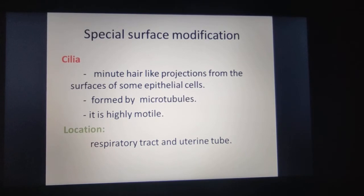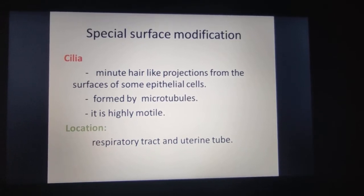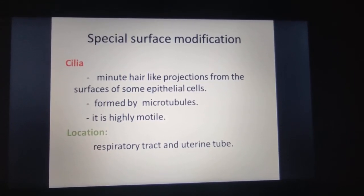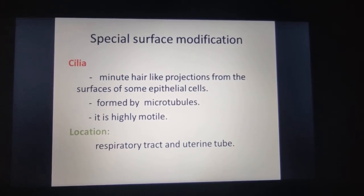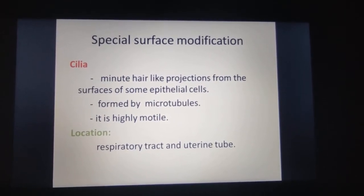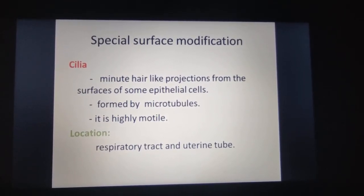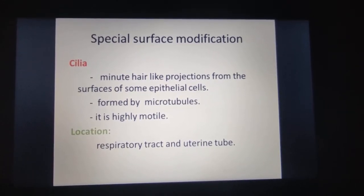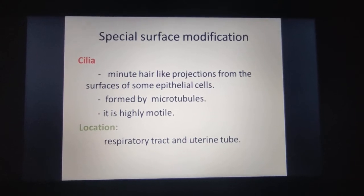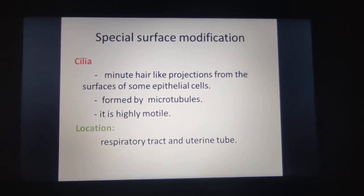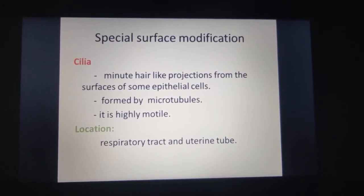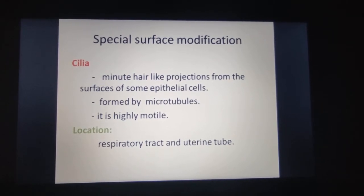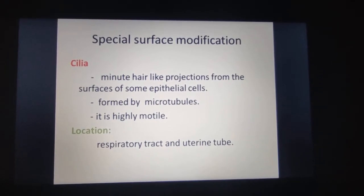Cilia are minute hair-like projections from the surface of some epithelial cells. They are formed by microtubules and are highly motile. Cilia are located in the respiratory tract and the uterine tube.